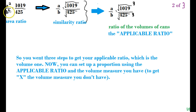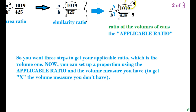To get the volume ratio, we cube both sides of the similarity ratio: a over b becomes a³ over b³, and (√1019 over √425) cubed gives us our applicable ratio. Then we set up a proportion using that applicable ratio with the known volume of 1157 cubic centimeters to find the unknown volume.